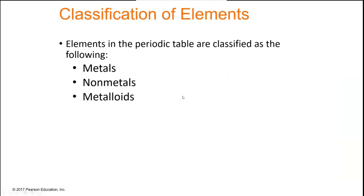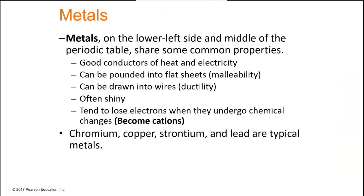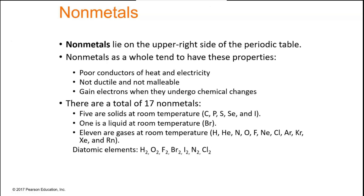On the periodic table we have metals, non-metals, and metalloids. Metals are on the left side and middle (transition metals); the far left contains alkali metals and alkaline earth metals. Key properties of metals: they are good conductors, can be malleable and ductile, and most importantly they lose electrons to become cations (positively charged ions). Non-metals are in the upper right; they are poor conductors, often exist as powder or gas, and tend to gain electrons to become anions (negatively charged ions).